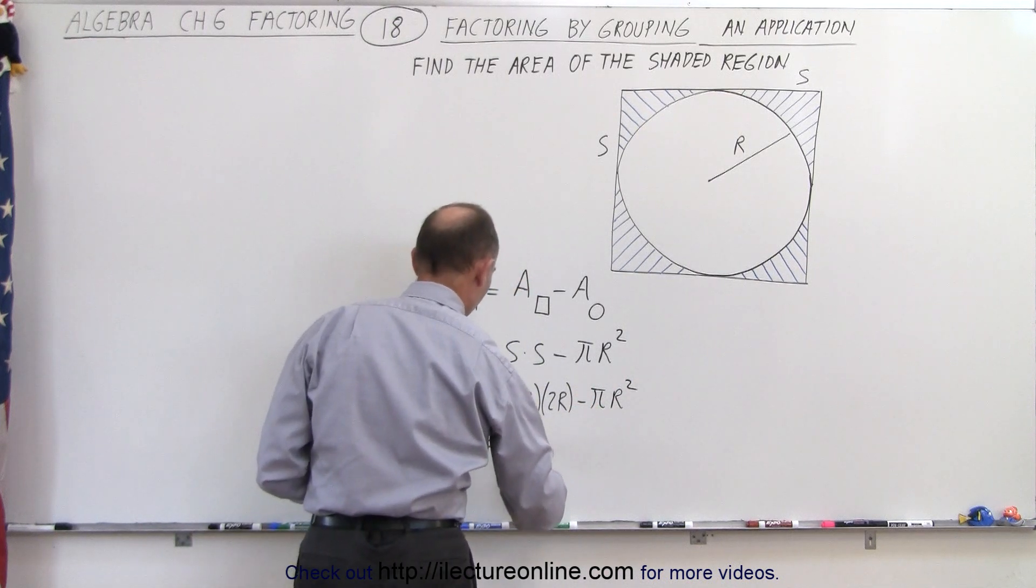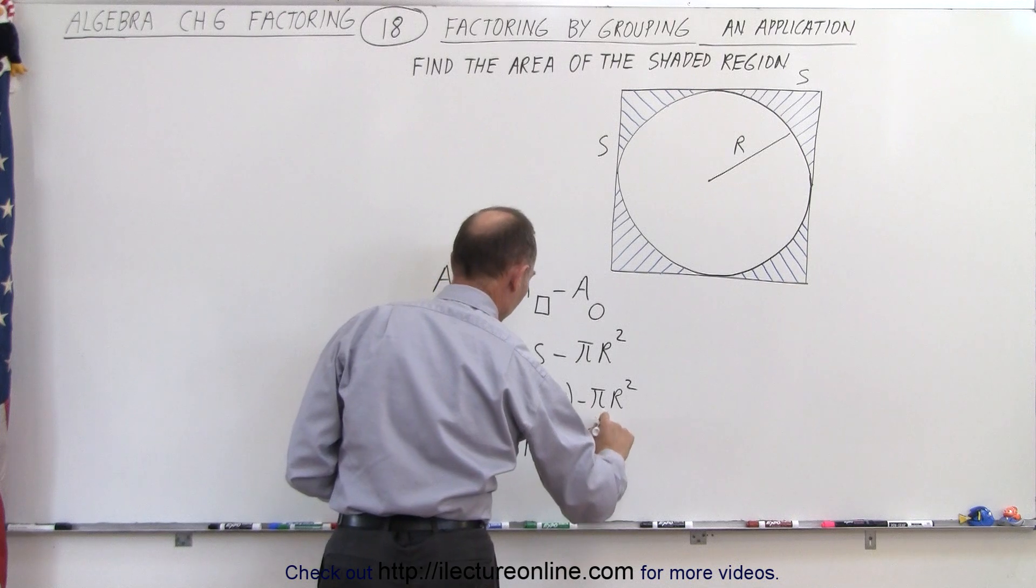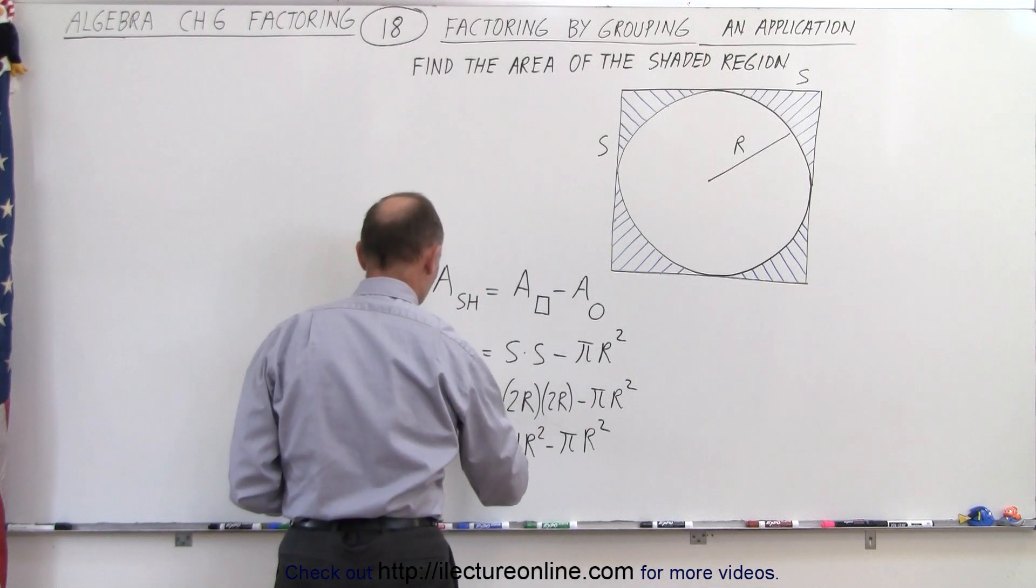This can be written as 4R squared minus pi R squared. So this is the area of the shaded region.